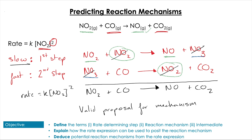It doesn't mean the proposed mechanism is true — it just means it's a valid proposal. We would have to determine if it's true experimentally. This can take time getting used to if proposing one from scratch, but usually you'll just be asked to propose a rate determining step or complete a half-finished reaction mechanism.